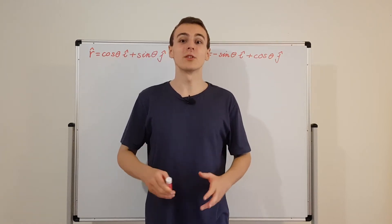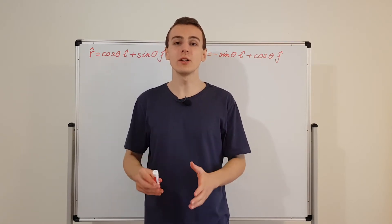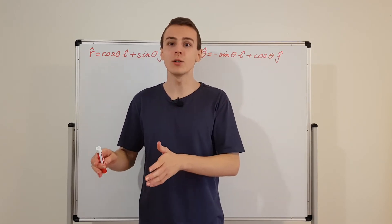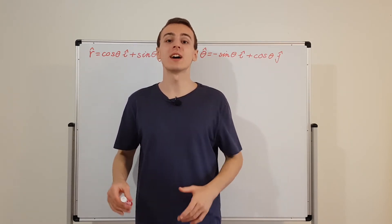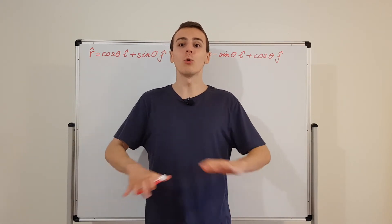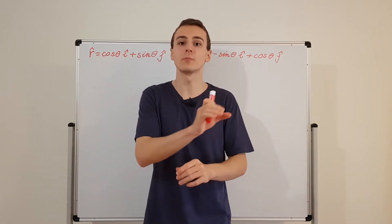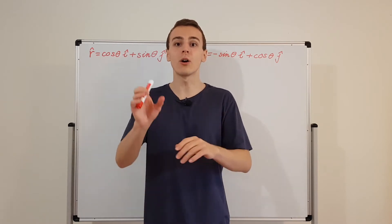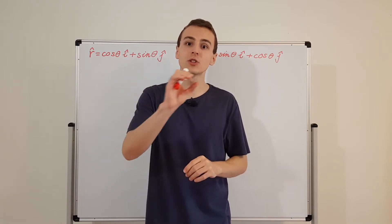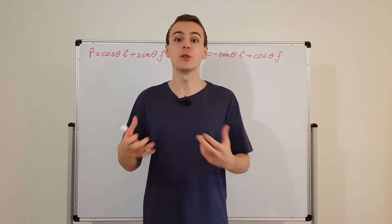Let's find the time derivatives of r hat and theta hat. In the previous few videos we differentiated r hat and theta hat with respect to theta, and then used the chain rule to find the time derivatives of those two unit vectors. In this video I'm going to do all of that in one derivation — explicitly differentiating everything with respect to time by breaking r hat and theta hat into horizontal and vertical components and differentiating each using the chain rule.